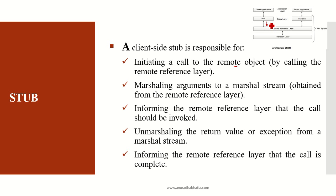These are the basic steps for RMI, divided into steps for stub, skeleton, remote reference layer, and transport layer. The first step is initiating a call to the remote object. The second step is marshaling arguments — transferring the data structure from one address space to another — into a marshal stream obtained from the remote reference layer. The third step is informing the remote reference layer that the call should be invoked.